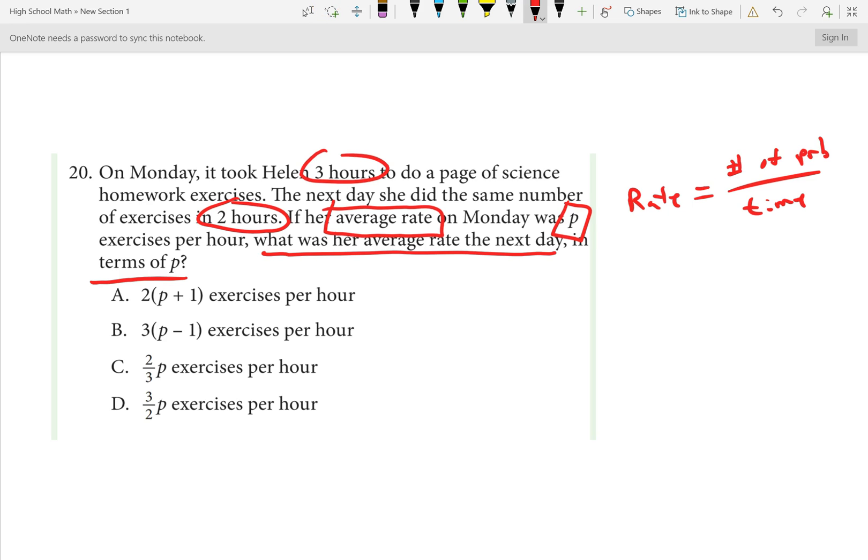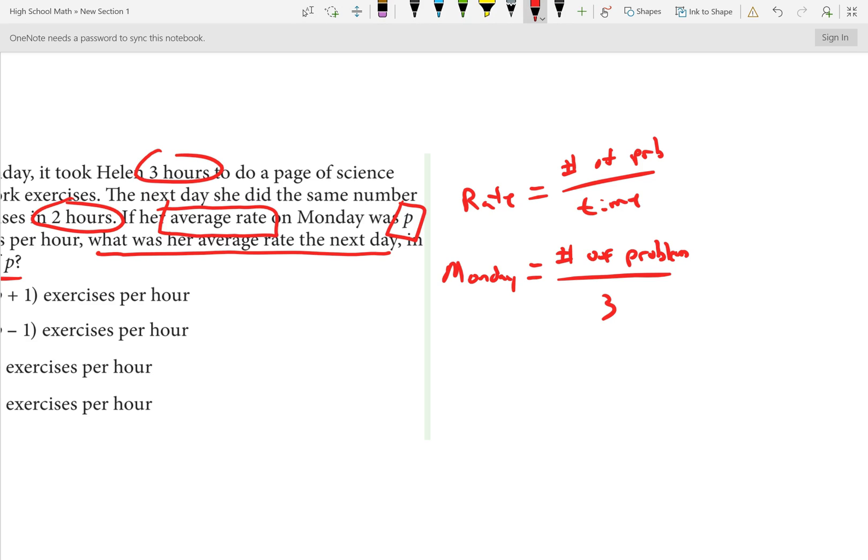The Monday rate is some number of problems divided by three. But we're also calling that P. That's P. We don't know what Tuesday is. That's the question in terms of this P. Well, Tuesday, the same number of problems. I'm just going to call that number of problems divided by two.